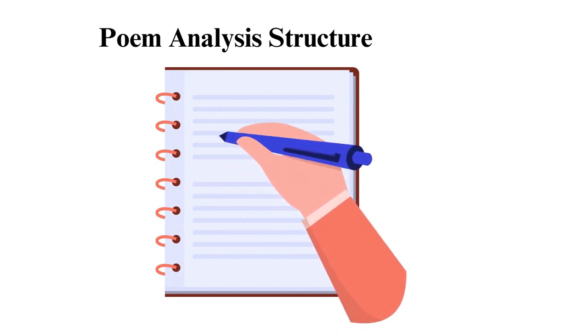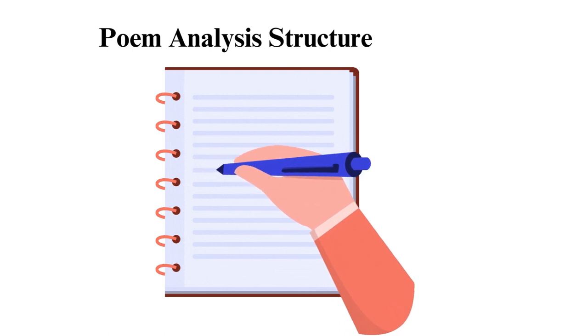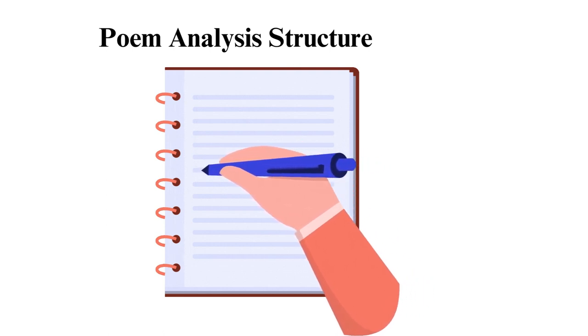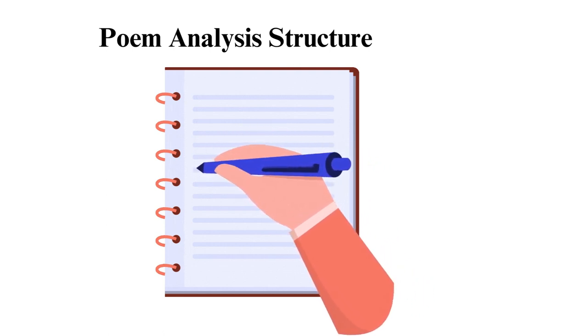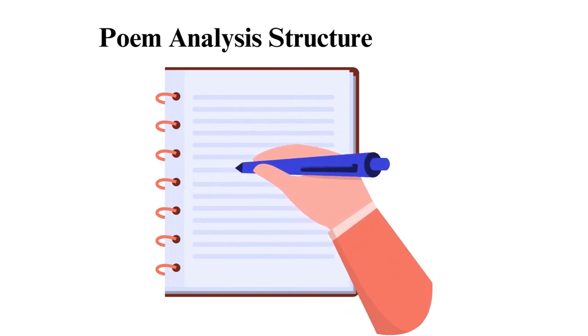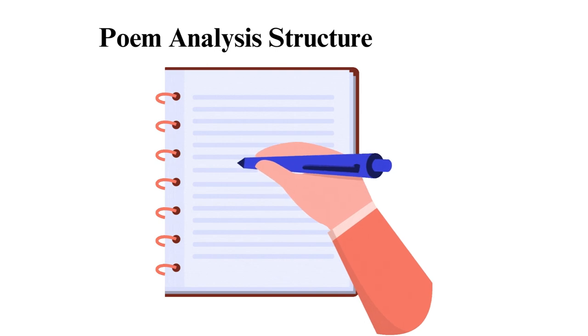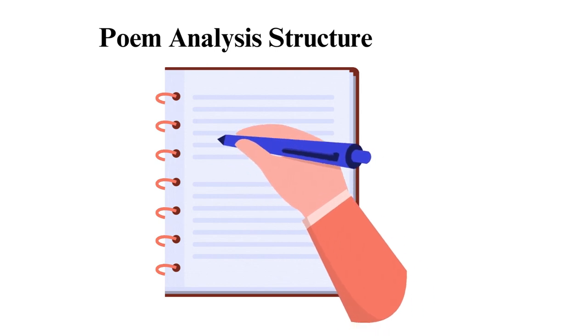3. Conclusion. Use this section to wrap up your essay by combining the various elements of the poem analysis, such as the themes, mood, tone, and other poetic devices extracted. You may also comment on the impact of the piece based on its meaning.